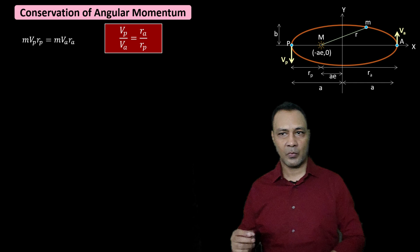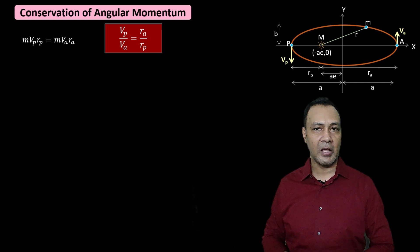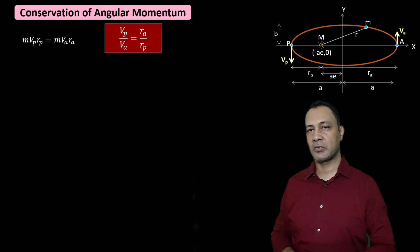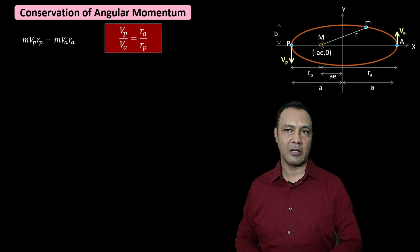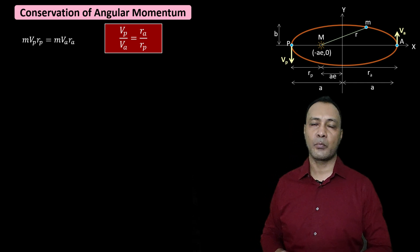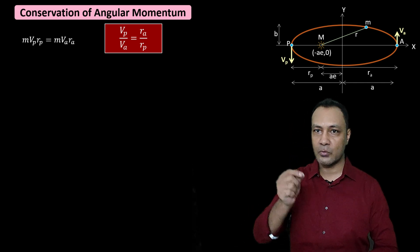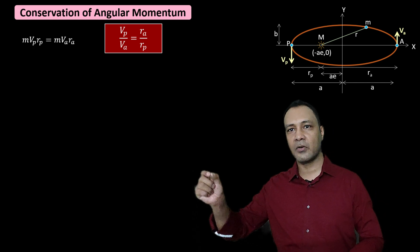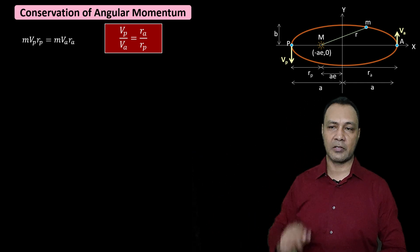Since Ra = A(1 + E) is larger and Rp = A(1 − E) is smaller, it means Vp is greater and Va is smaller. So when the planet is nearest to the Sun, its speed is greater, and when it is farthest from the Sun, its speed is smaller. We will use this result later.